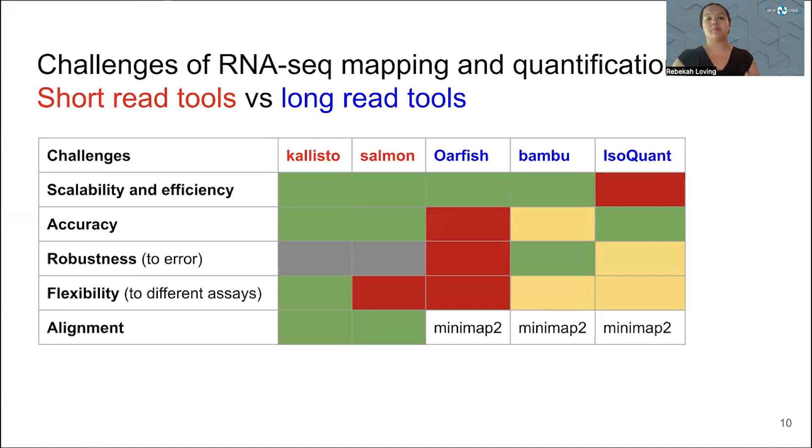Before we can answer that question, we need to be able to actually quantify long read RNA sequencing accurately. What we've found is that a lot of the long read tools aren't both scalable, efficient, and accurate. So Isoquant is one of the most accurate tools, but it really does not scale well. But in short read RNA, the scalability, efficiency, and accuracy have all really been met by the tools Kallisto and Salmon.